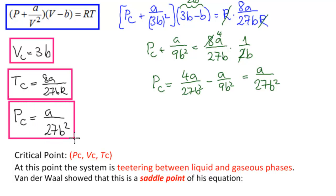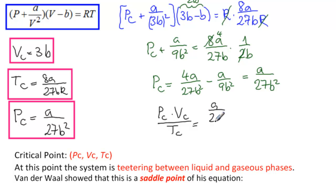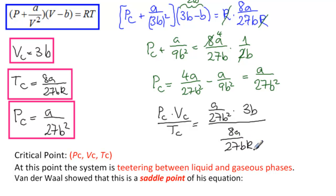So the critical point is VC equals 3B, TC equals 8A/27BR, and PC equals A/27B². As a final check, PC times VC over TC equals (A over 27B²) times 3B, divided by (8A over 27BR). All the A's and B's cancel, and we get 3R over 8.